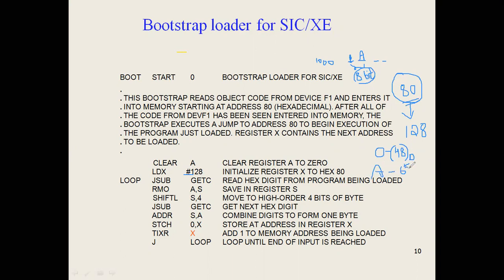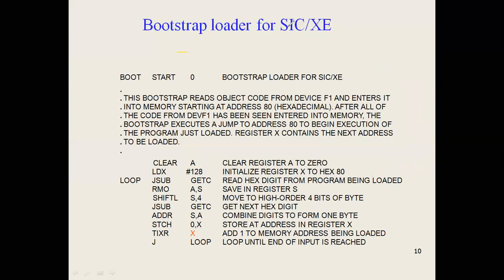If you convert 48 to hexadecimal you get 30, and if you convert 65 to hexadecimal you get 41. Remember these values. Register A is the accumulator — the register where all current operation results are stored.